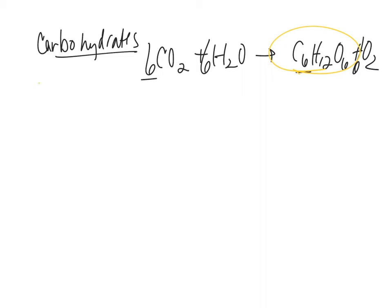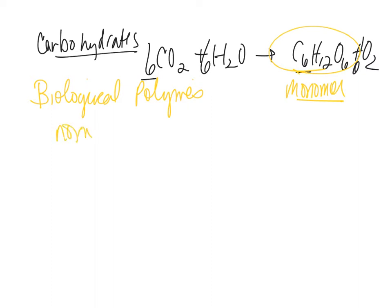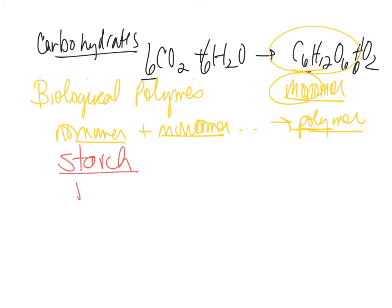We're looking at biological polymers now. Every day we're going to be talking about different biological polymers. Glucose is a monomer. Monomers are added together — you have one monomer and another monomer and you keep adding, and that makes a polymer. Poly means more than one. Carbohydrates — the polymers are called starch, like what we have in potatoes. That's how we store our monomers.